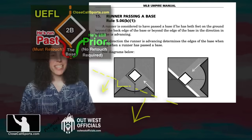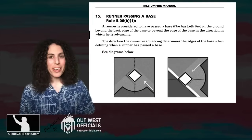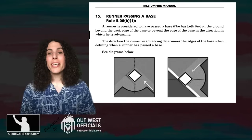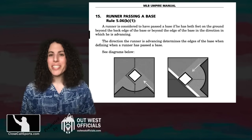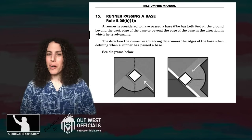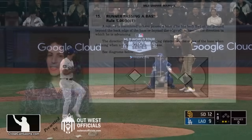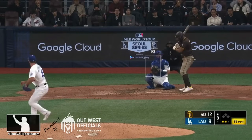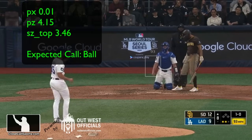So the Padres successfully appeal this, and we move on to the next play, which is a Xander Bogaerts strikeout. Bases empty, two out. Xander Bogaerts takes a high pitch from the pitcher.